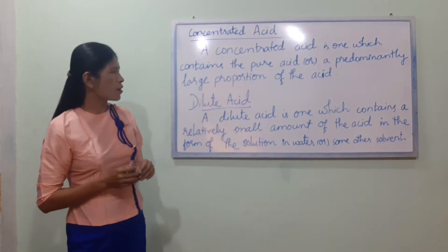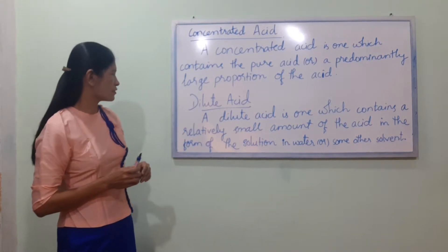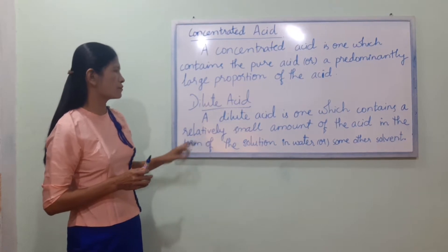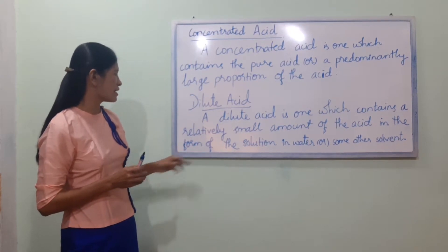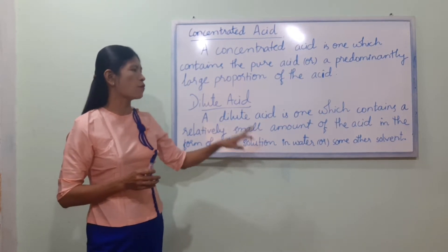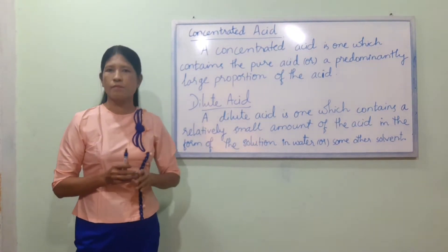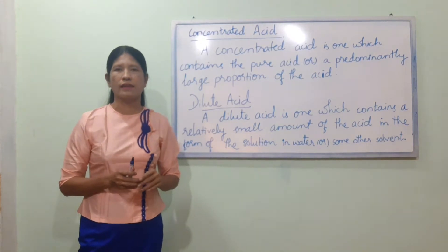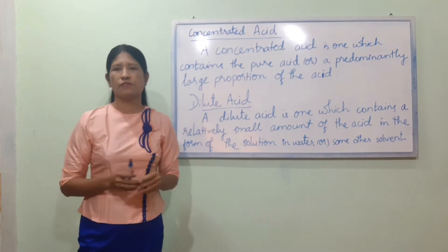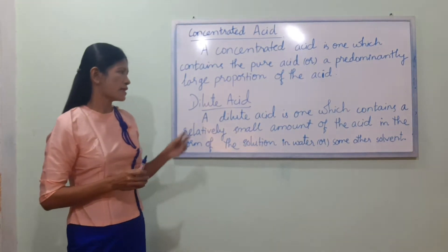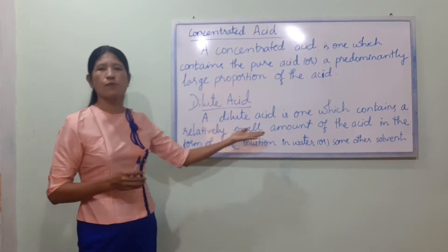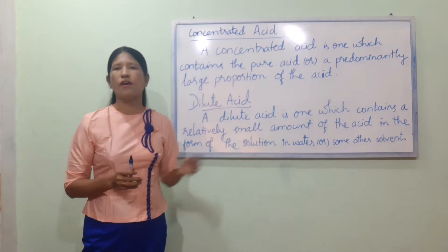A dilute acid is one which contains a relatively small amount of the acid in the form of a solution in water or some other solvent.